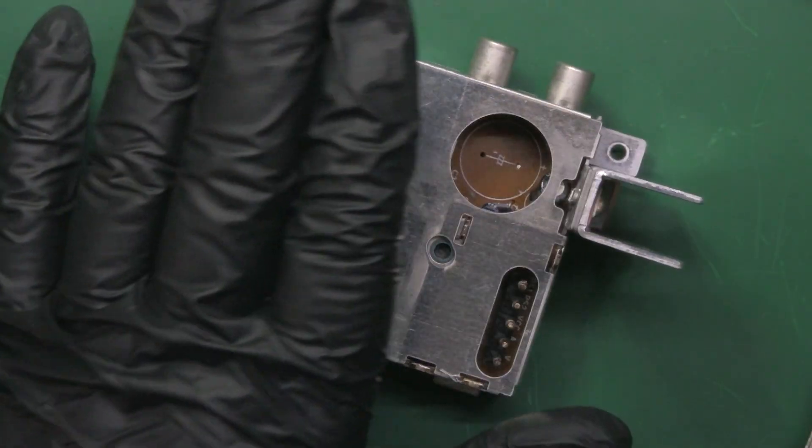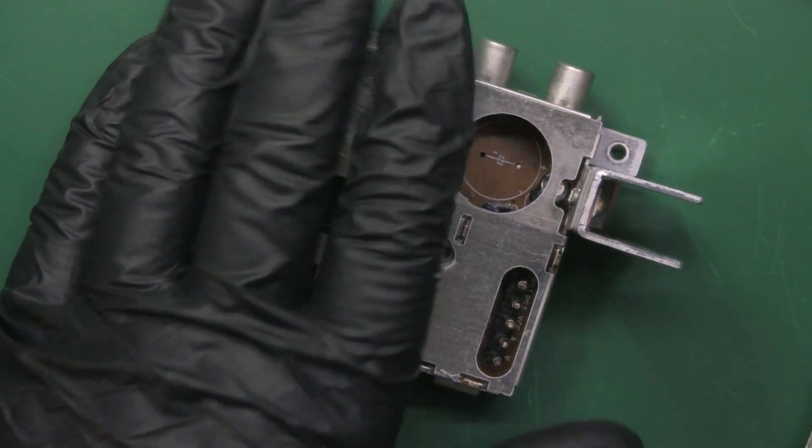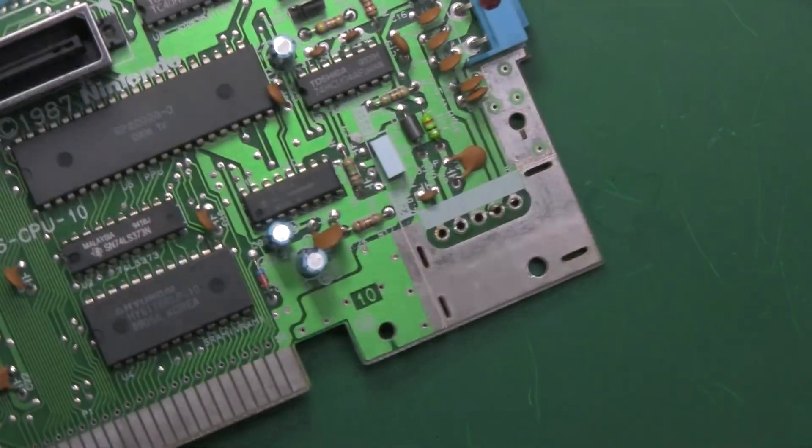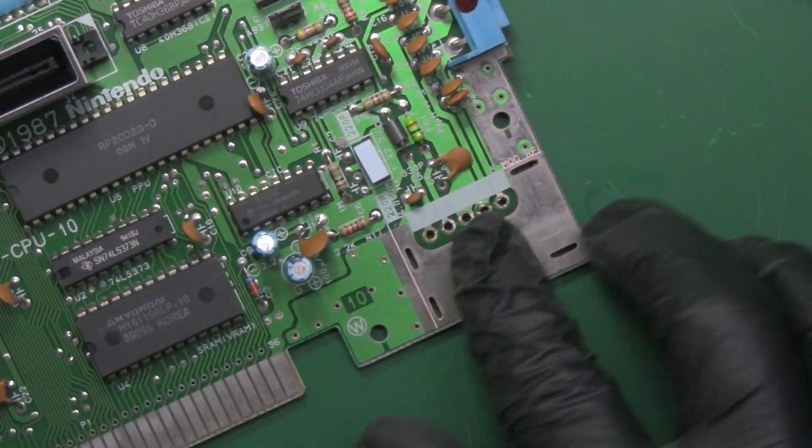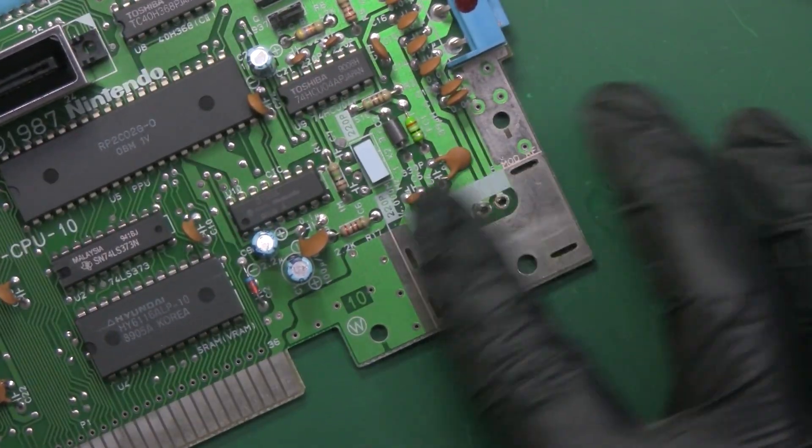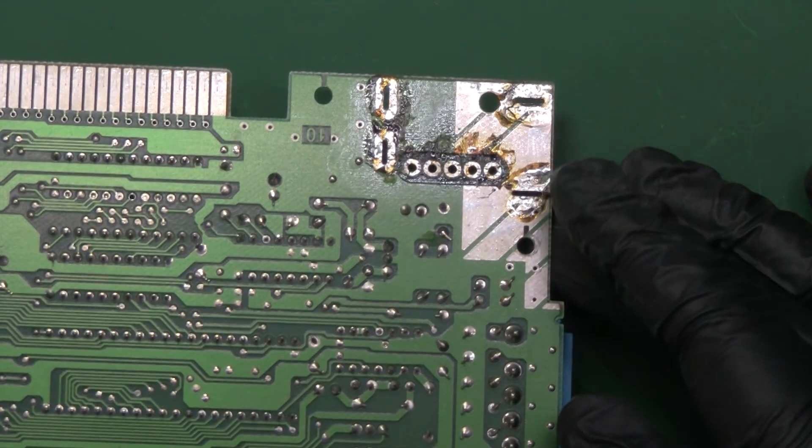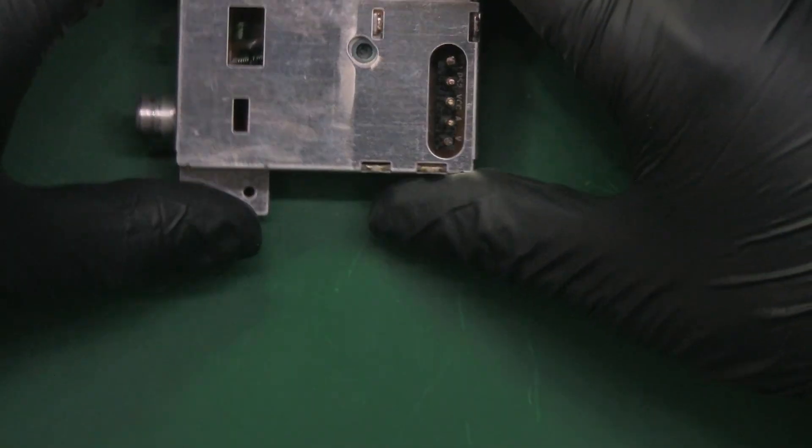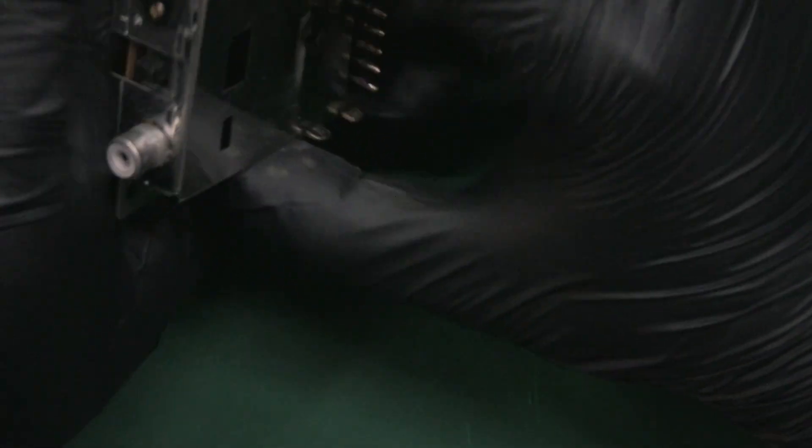And there we have it. We've removed the RF module which also provides the electricity. And in case you're wondering what it looks like when this thing is removed that's pretty much how it is. We'll of course need to clean this up a little bit. Now that we have this thing dislodged from the board we can pop it open and see what's inside. I've opened up many of these but for some of you it may be your first time.